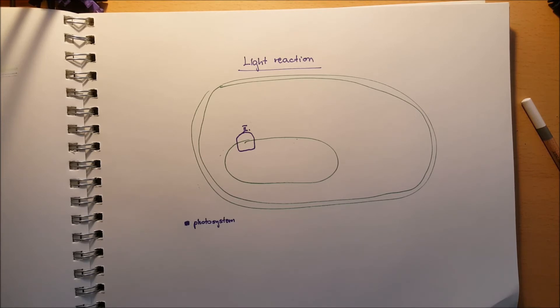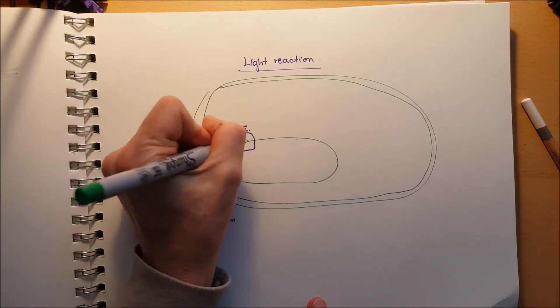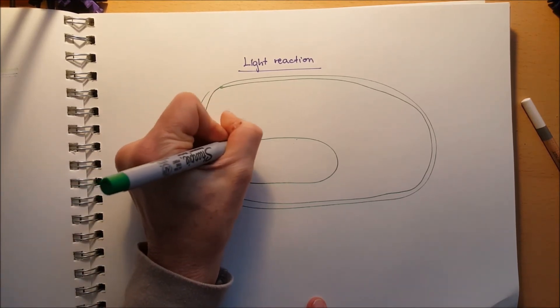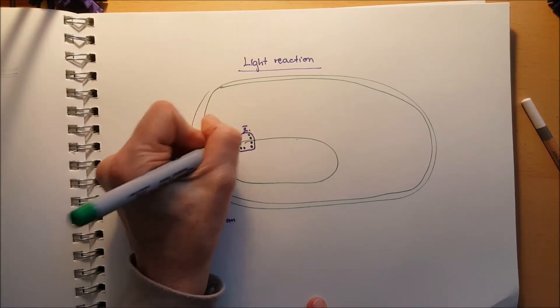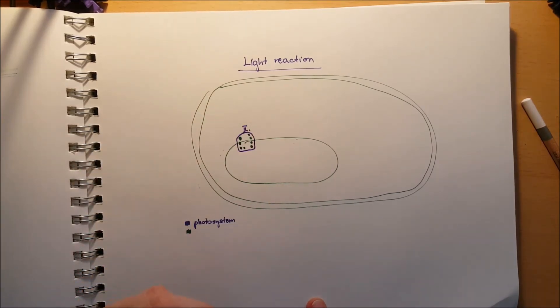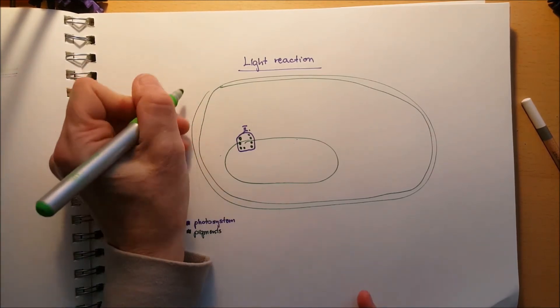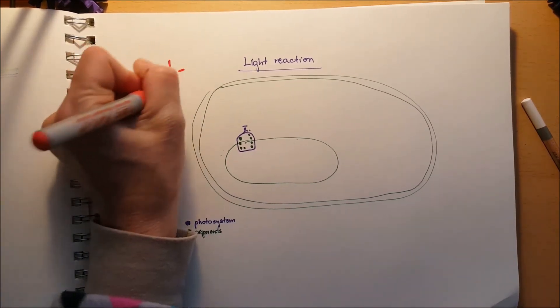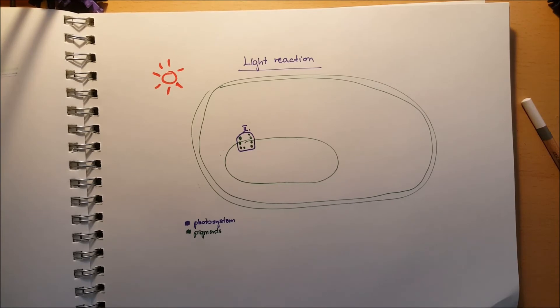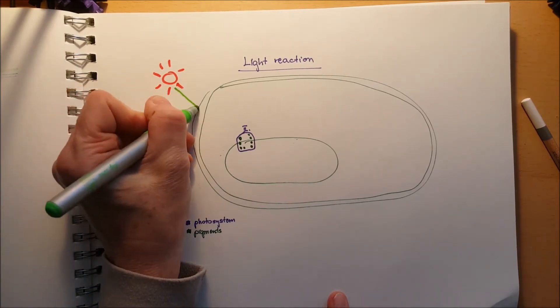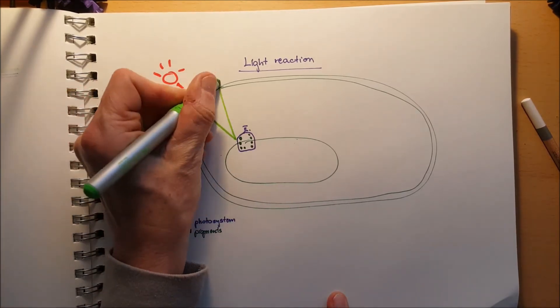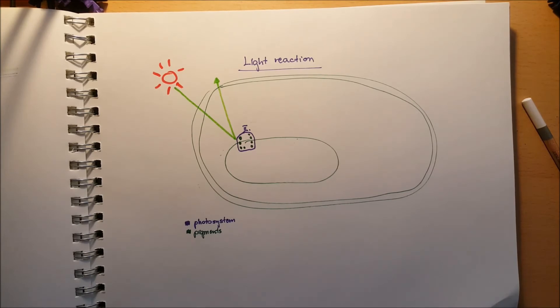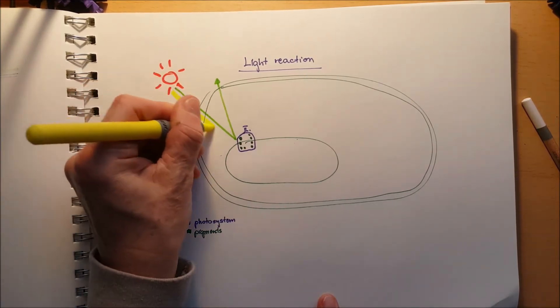This is photosystem two. That's the first one. But it may historically name this photosystem two. These green dots are the pigments and they are the light harvesting pigments, or the light harvesting complexes. The sun is over there and it sends out electromagnetic waves. Green light, for example.